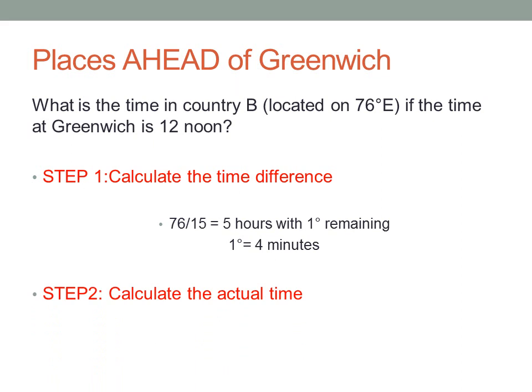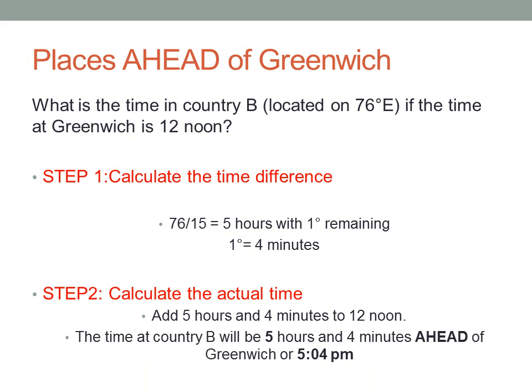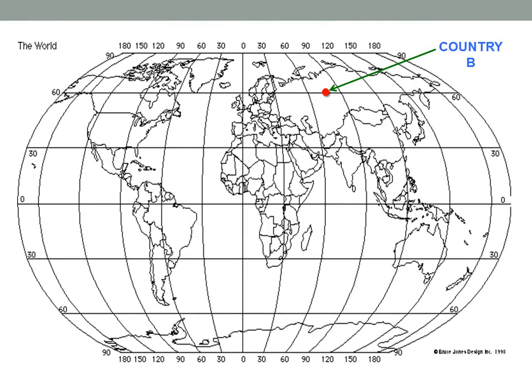Our second step involves calculating the actual time. Considering that country B is east of Greenwich, country B will be farther ahead in time. So we're going to add 5 hours and 4 minutes to 12 noon. The time at country B will be 5 hours and 4 minutes ahead of Greenwich, or 5:04 p.m. Country B is located at 76 degrees east of the Greenwich meridian.